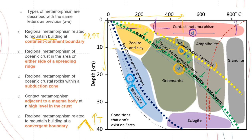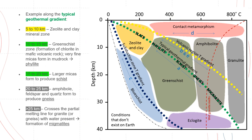And there you have it — all five examples mapped out on the diagram. Now let's talk about the zones that come into contact with the typical geothermal gradient of 30 degrees Celsius per kilometer, represented by the green line, and discuss the different metamorphic zones it passes through.